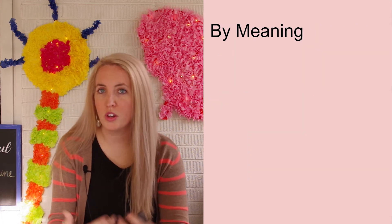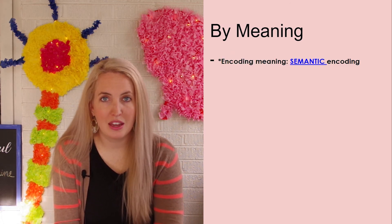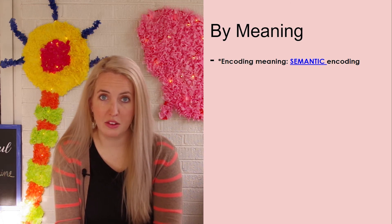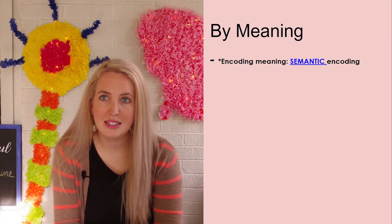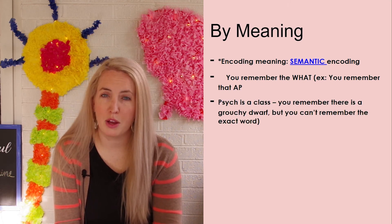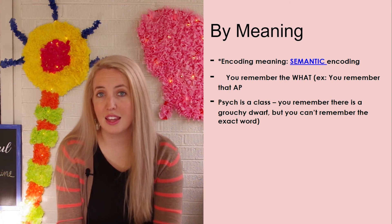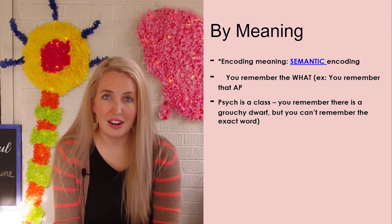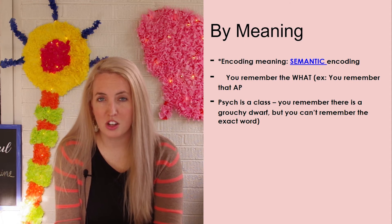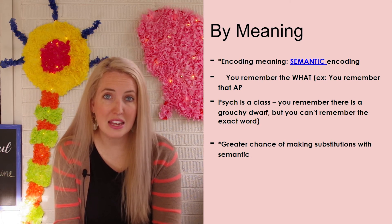Psychologists look at three major areas of how we encode information into our long-term memory: we encode by meaning, by visualizing, and by mentally organizing. Encoding by meaning is also referred to as semantic encoding — semantic just means meaning. When we encode by semantic encoding, what we're remembering is what things are. For example, you might remember that AP Psychology is a class — that AP Psych equals a class in your schedule. If that is how you remember it, you've encoded it semantically.